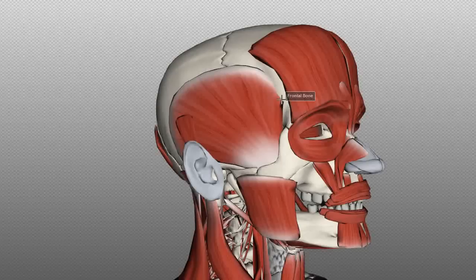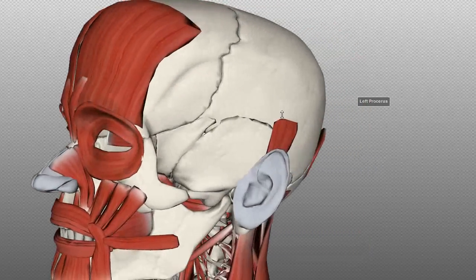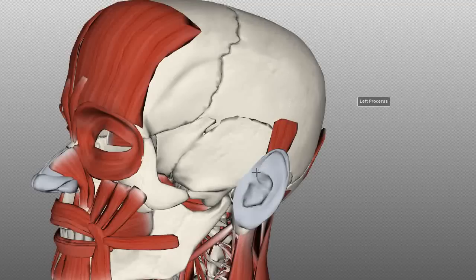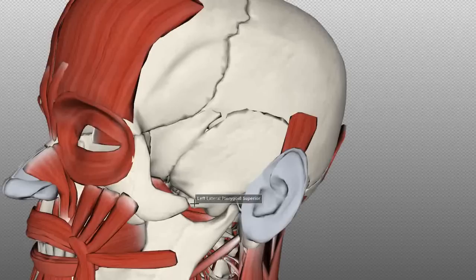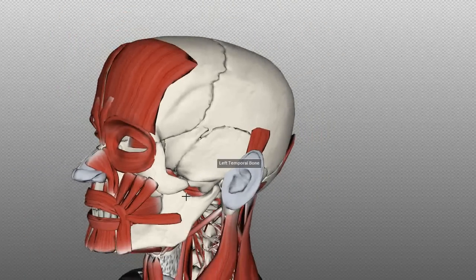I'll begin by showing you the temporalis muscle — this big muscle which sits in the temporal fossa of the skull. If I just show you the temporal fossa, you can see this indentation on the lateral aspect of the skull, and this is where the temporalis sits. All the muscles of mastication insert onto the mandible because the mandible is the bone that moves to cause mastication — it's the bone involved with chewing. The temporalis inserts onto the coronoid process of the mandible.